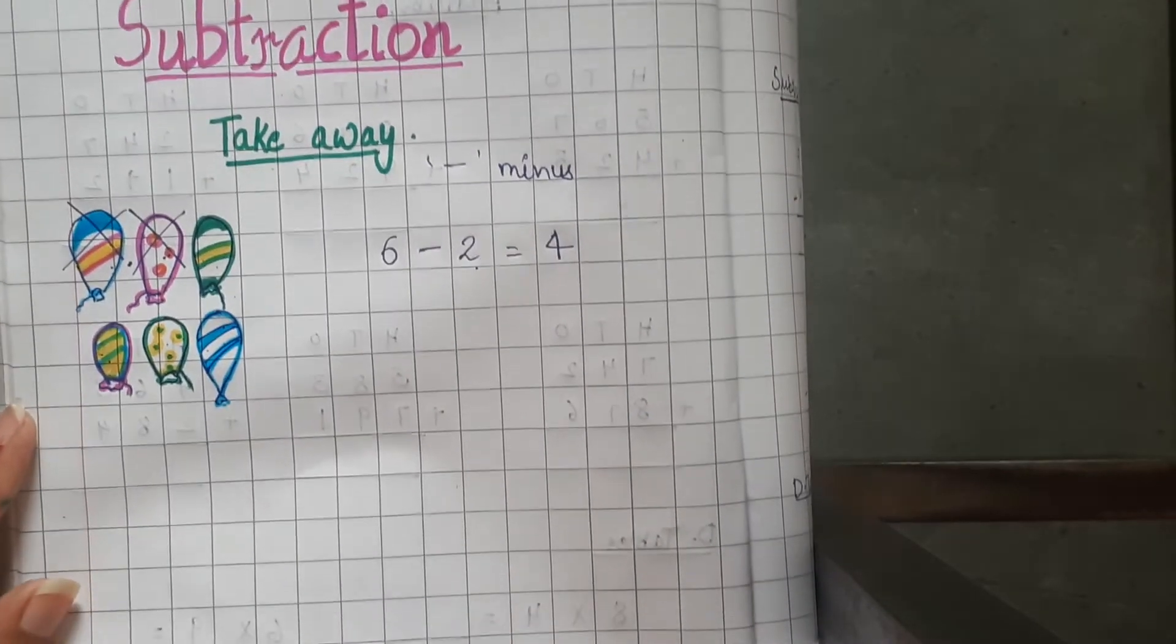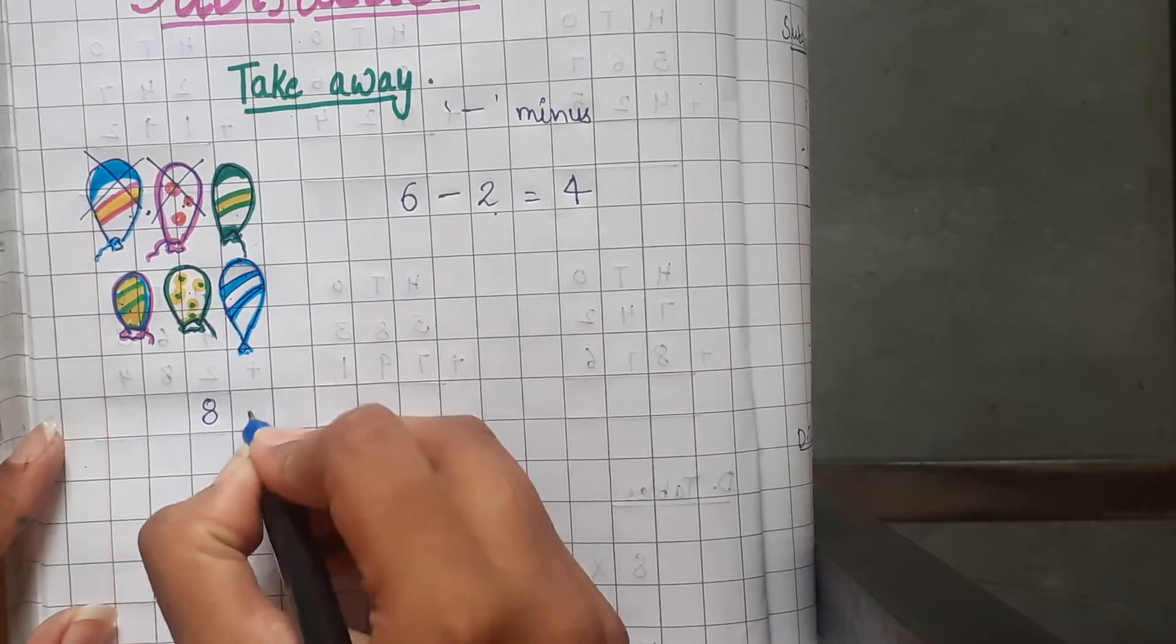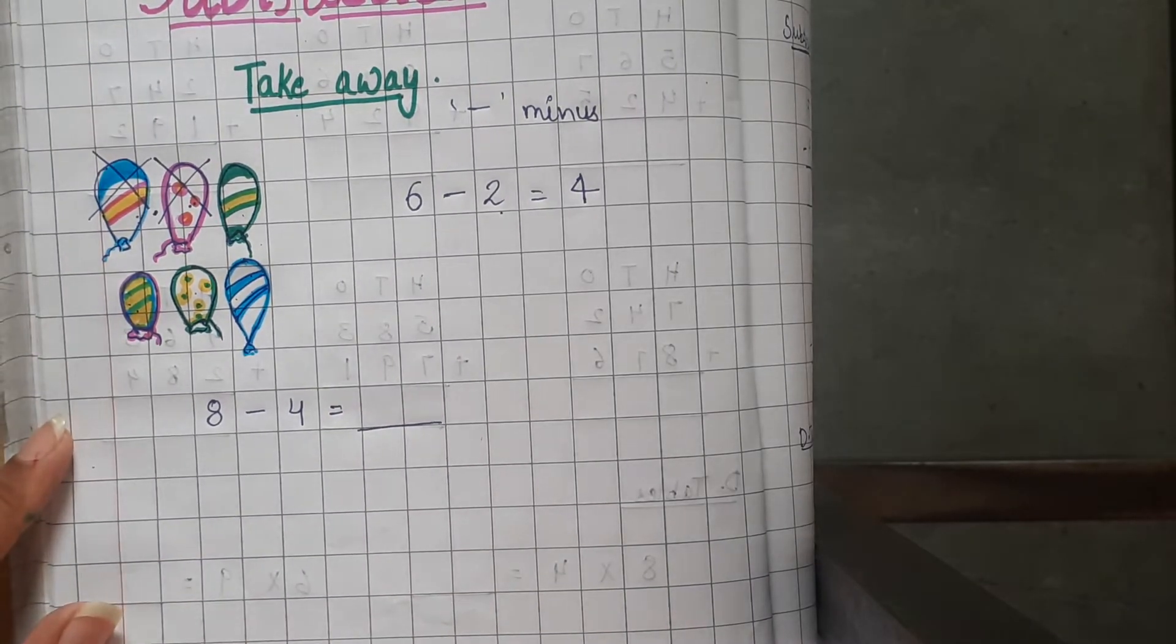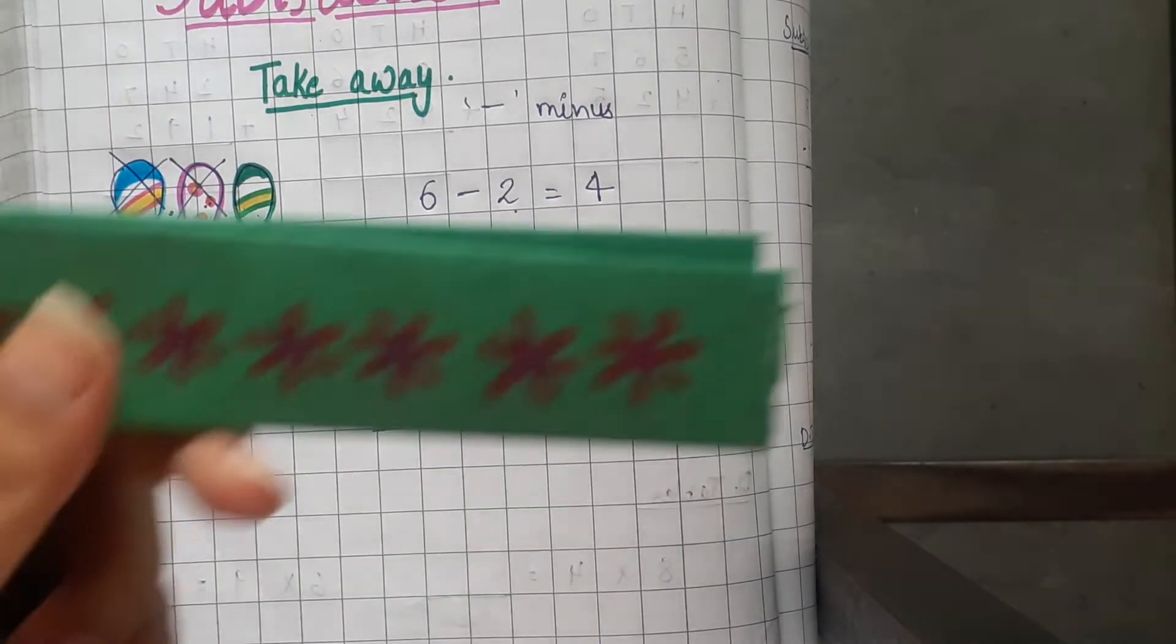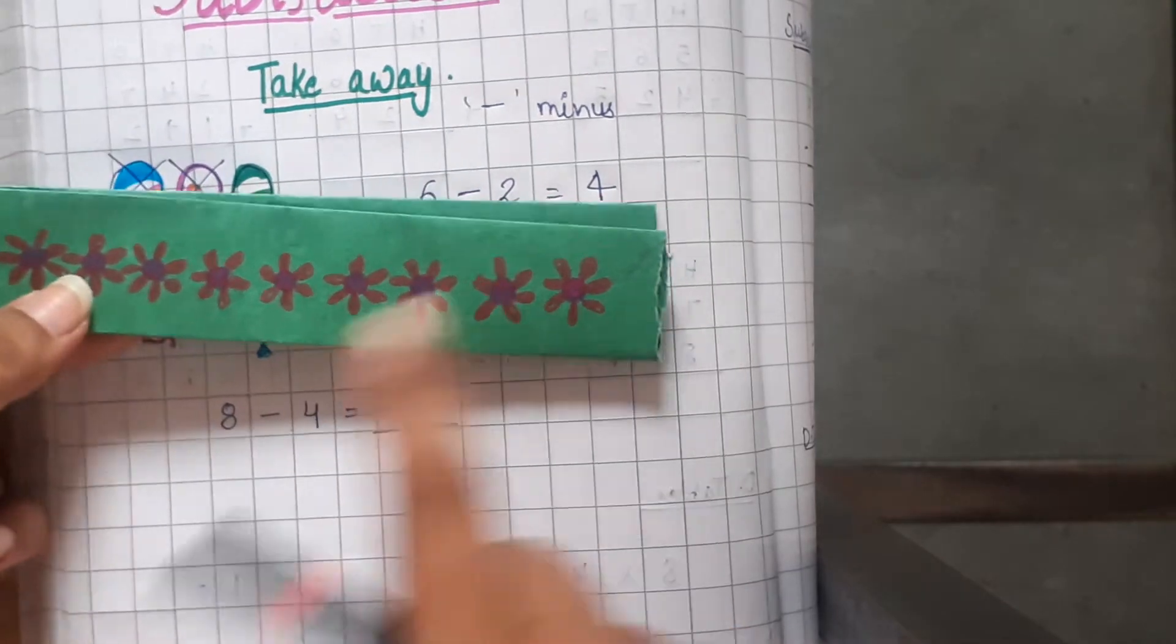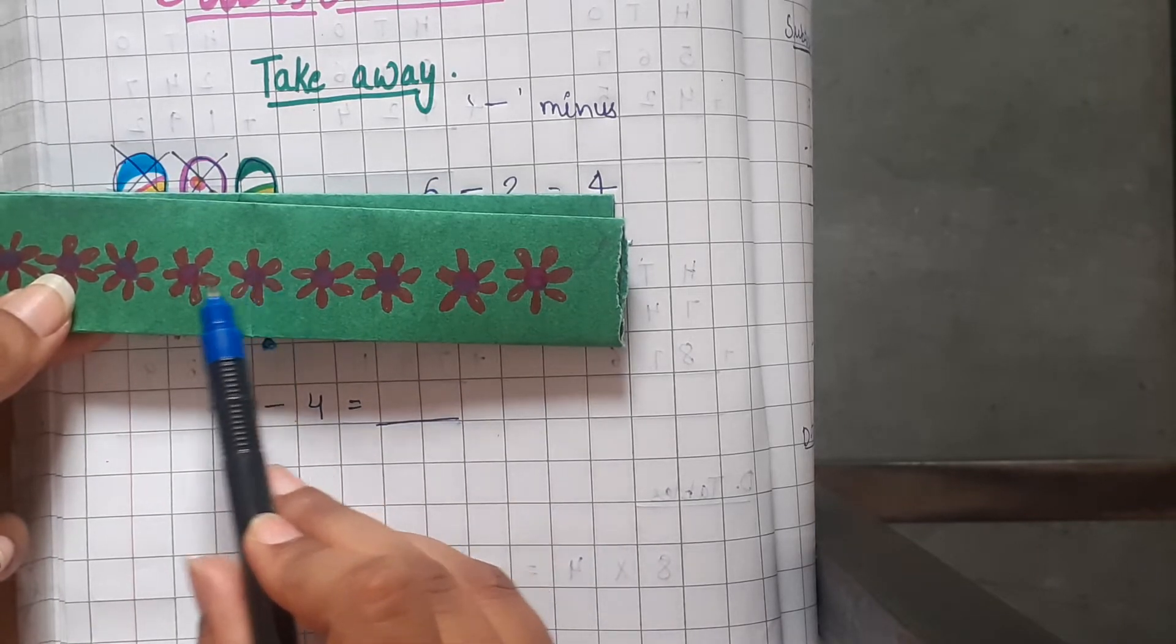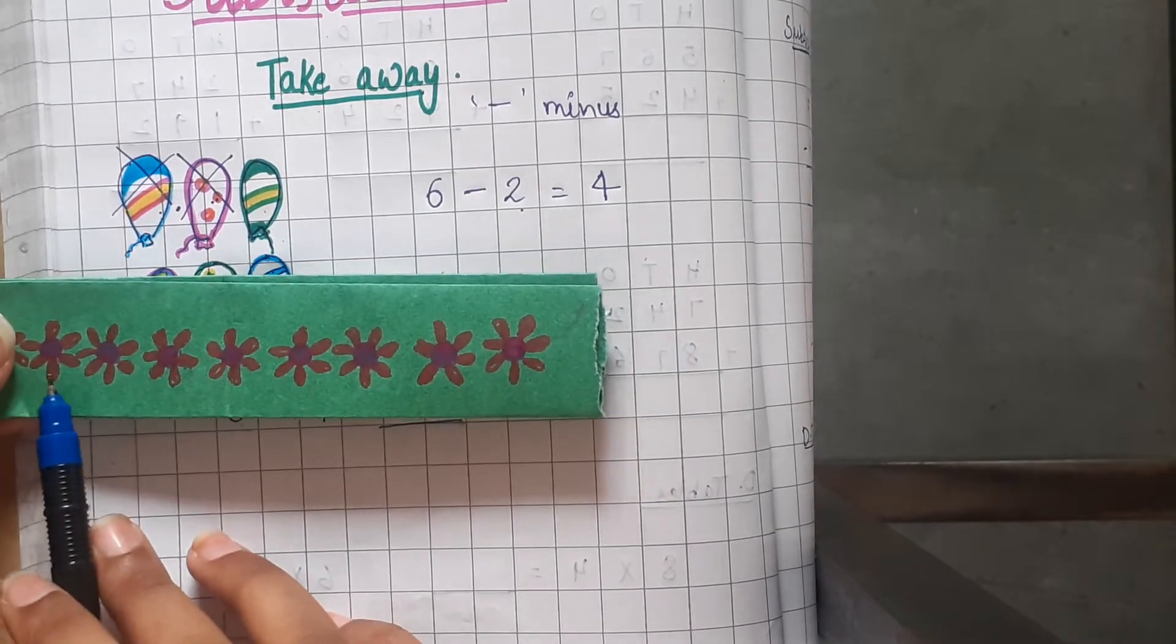Now let us do one more sum like this. 8 minus 4 equals dash. Now we have to find out what is 8 minus 4. For this, let us take help of this strip. Let us first count 8 flowers: 1, 2, 3, 4, 5, 6, 7 and 8. So these are 8 flowers.